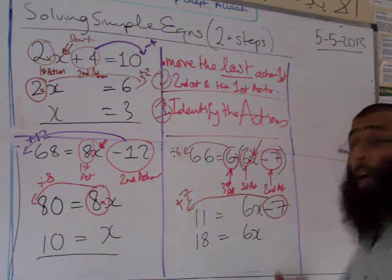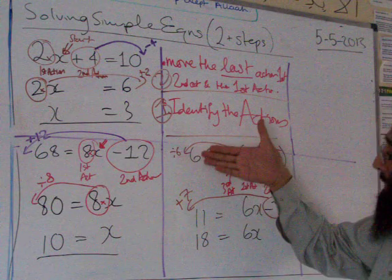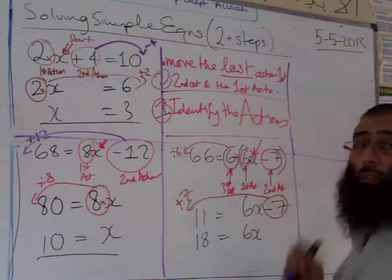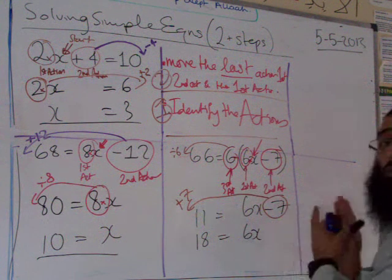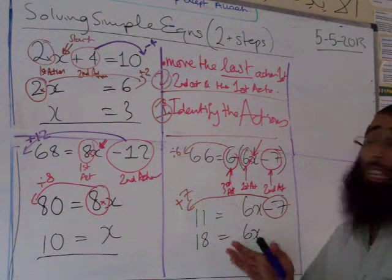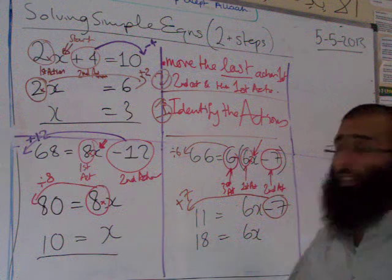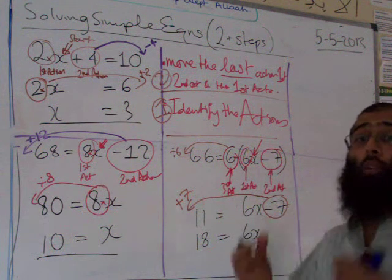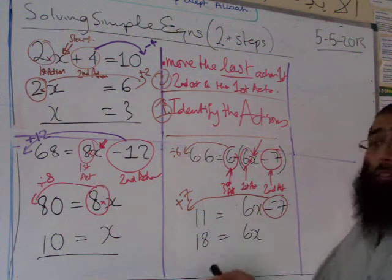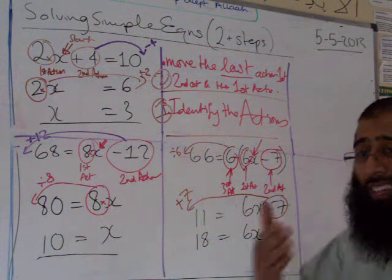Now move to the second action: minus seven. Opposite of minus seven is add seven. 11 add 7 equals 18. Copy the 6x down — 6x equals 18. When you do your working, copy numbers and equals signs down consistently. Keep everything lined up so your teacher or examiner can see you understand algebra clearly.